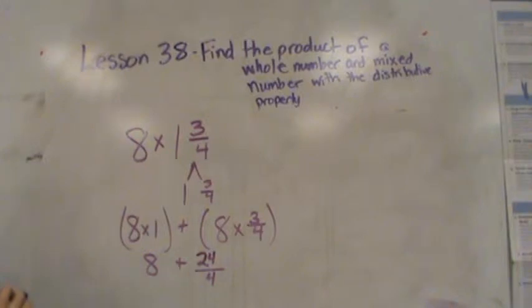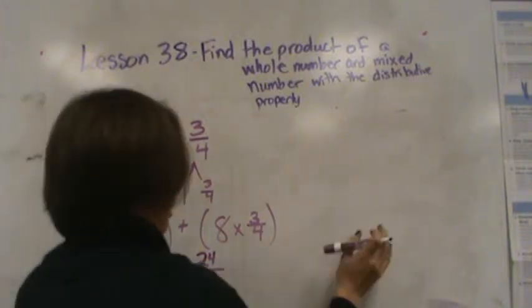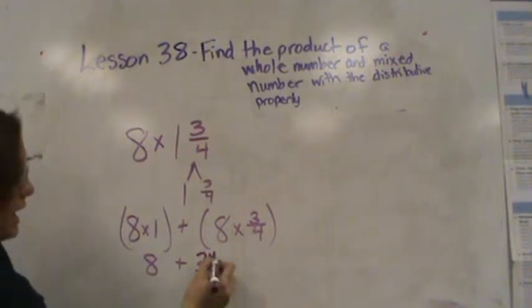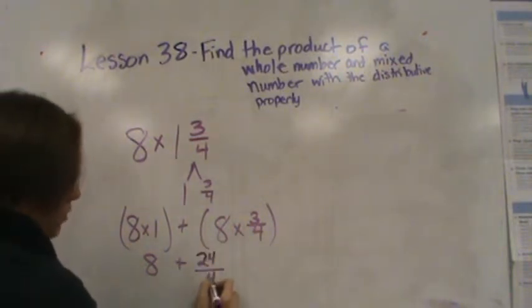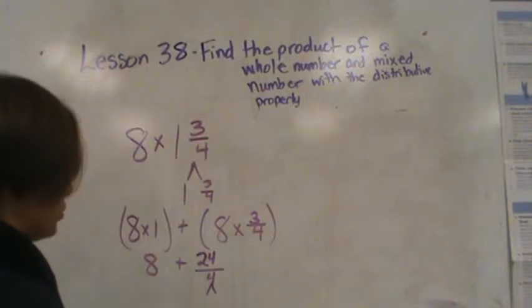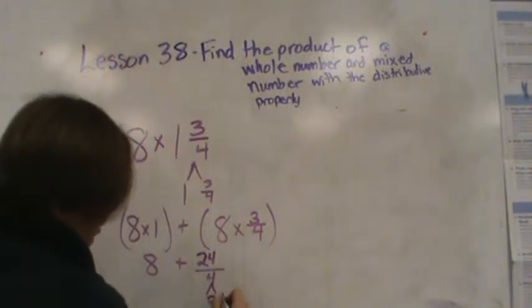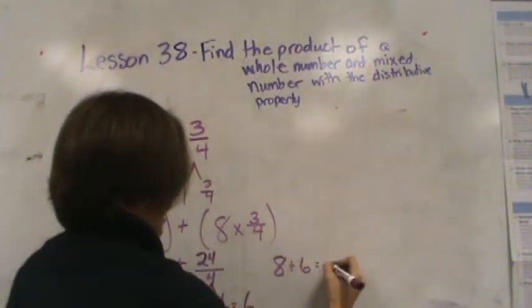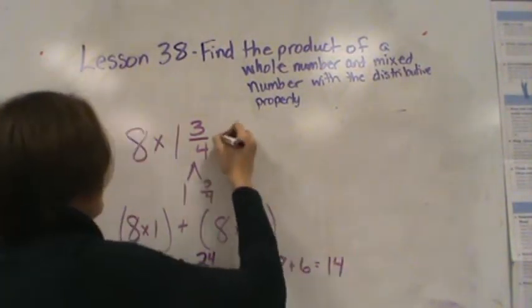Now, last time when we did this, I had you decompose last. This time we're going to decompose first. I know that 24 fourths is equal to 24 fourths, which is the same as saying 6. So I'm going to have 8 plus 6 and that's going to give me 14 as my final answer.